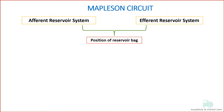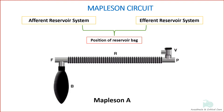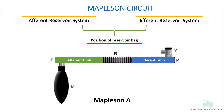The afferent limb is that part of the breathing system which delivers the fresh gas from the machine to the patient. The efferent limb is that part of the breathing system which carries the expired gas from the patient and vents it to the atmosphere through the expiratory valve.